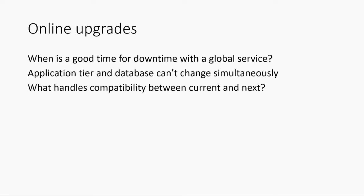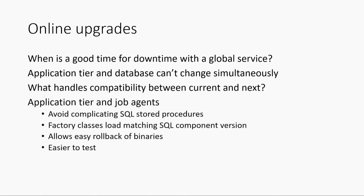Now, if you're going to do an upgrade, not everything can change simultaneously — it's just not possible. So if we're not going to be able to change the application tiers, the job agents, the virtual machines, and the database together at the same time, who's going to have to handle the fact that they're different? Where are we going to absorb that complexity?